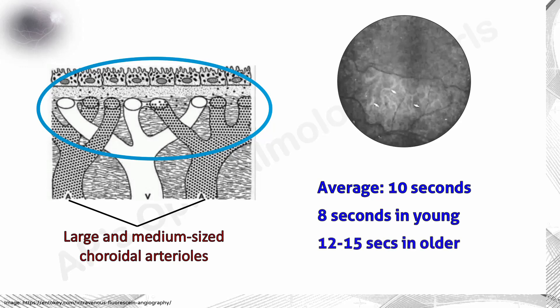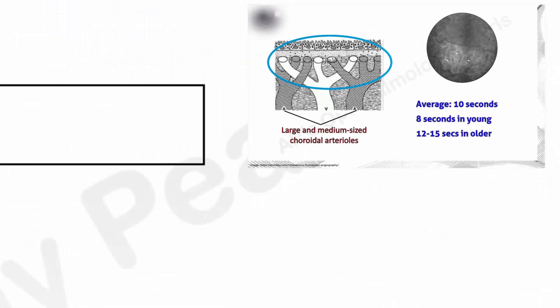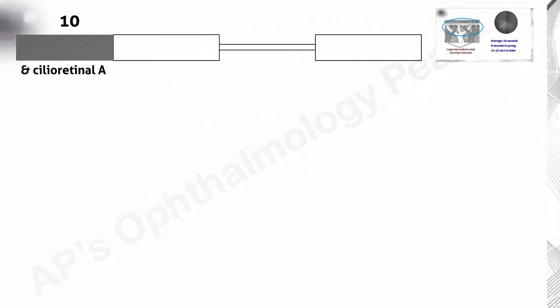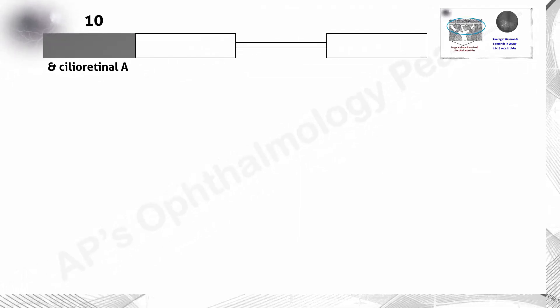Initial choroidal filling is patchy and mottled due to sequential filling of the choroidal lobules. Within 3 to 5 seconds, a uniform choroidal flush is seen. If there is a cilioretinal artery, it fills up at this stage.